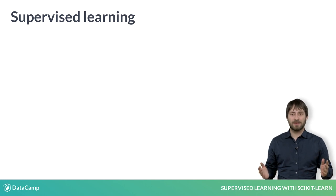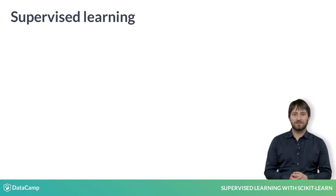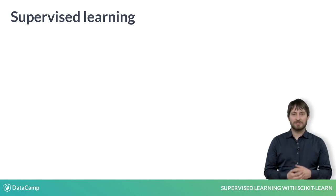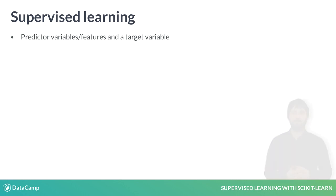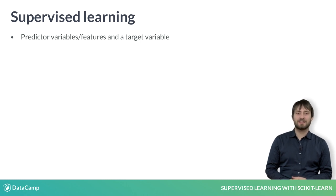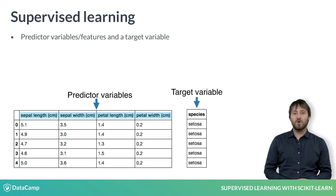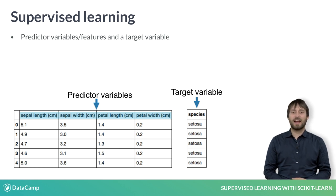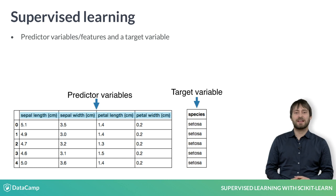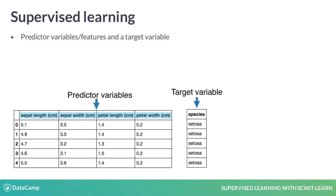But let's come back to supervised learning, which will be the focus of this course. In supervised learning, we have several data points or samples described using predictive variables or features, and the target variable. Our data is commonly represented in a table structure, with a row for each data point and a column for each feature. Here we see the iris dataset, where each row represents measurements of a different flower and each column is a particular kind of measurement, like the width and length of a certain part of the flower.